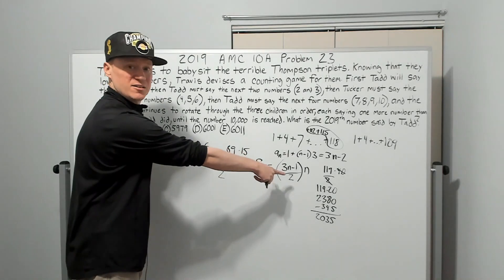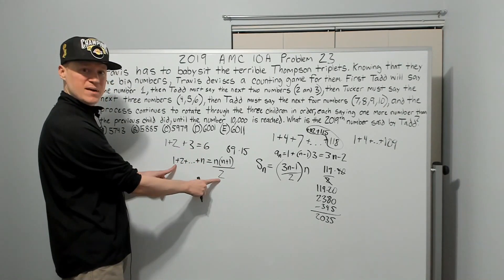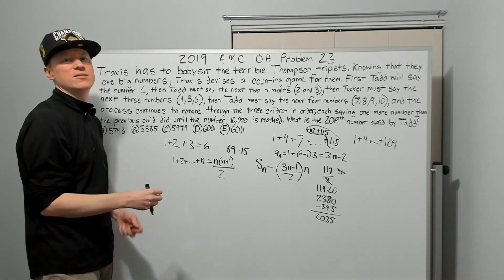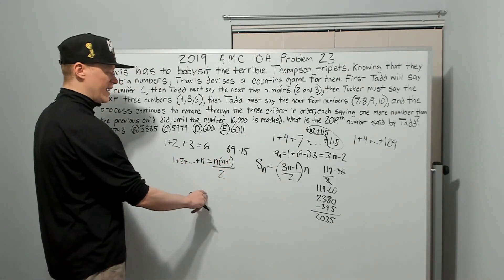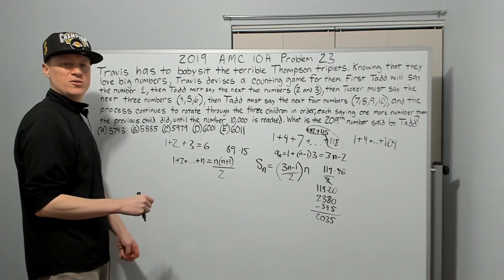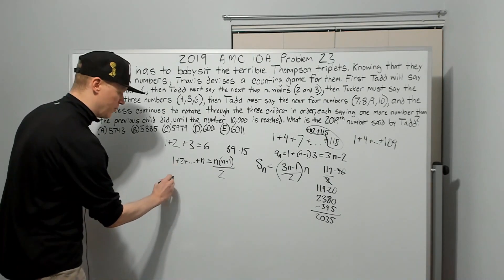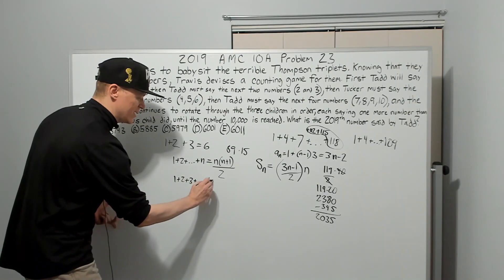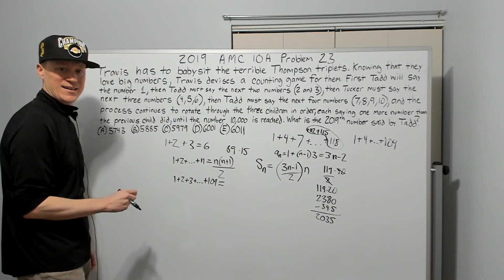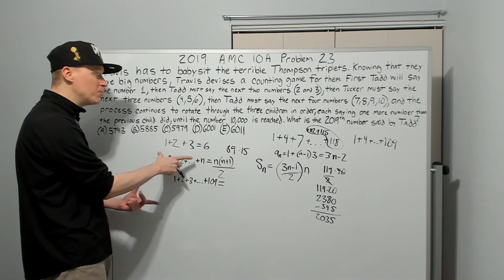This one's not that hard to memorize. It comes up so often if you do a lot of competition stuff that you should memorize it. But if you forget it, you can use what we did over here. It's the average of the first and the last, divided by 2 makes it an average, times the number of terms, n. Because there's n terms, you're literally counting the terms. When you get to n, you've said n terms, right? So, that's what we want. And we know that he, when he says 109 numbers, that means all of the numbers from 1 to 109, groups of numbers from 1 to 109 have been said. And when I add up 1 plus 2 plus 3 plus dot dot dot plus 109, whatever I get will be the last number said by Tad.